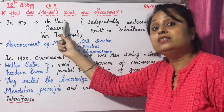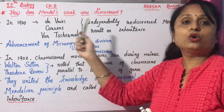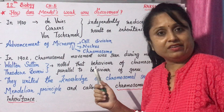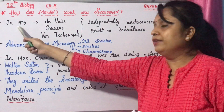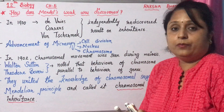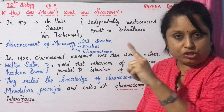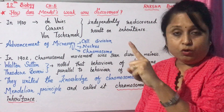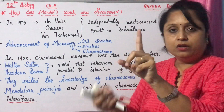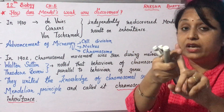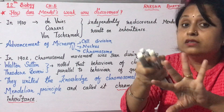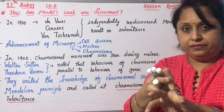The first scientist was De Vries, the second was Correns, and the third was Von Tschermak. In 1900, these three scientists independently rediscovered Mendel's results.